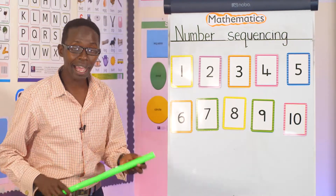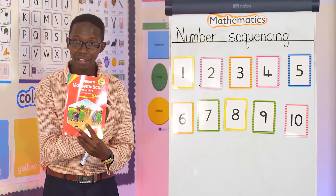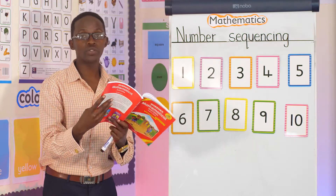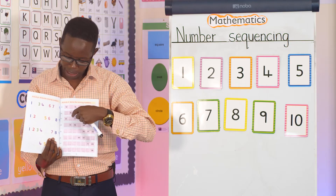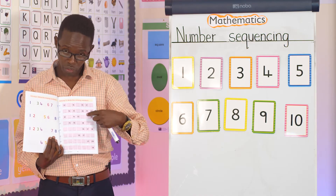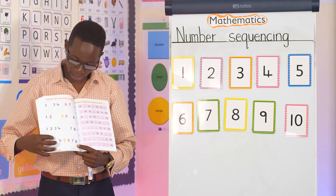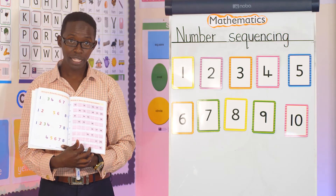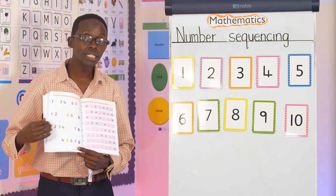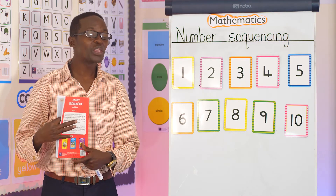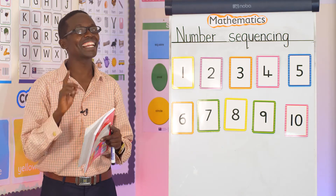Teacher wants to give you some work on missing numbers. When you take this book, open page 46. You'll find missing numbers, so you need to write in your book and fill in the missing numbers. You can do number 45 and number 46. If you have another book, you can do those sums on the page that has missing numbers. Thank you for listening. You are good boys and girls. Till the next lesson. Bye.